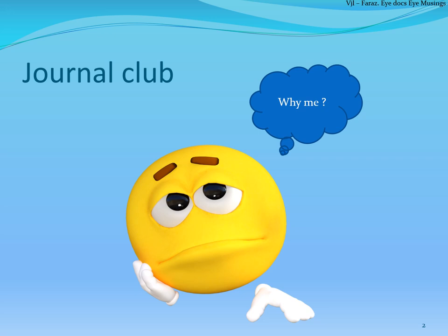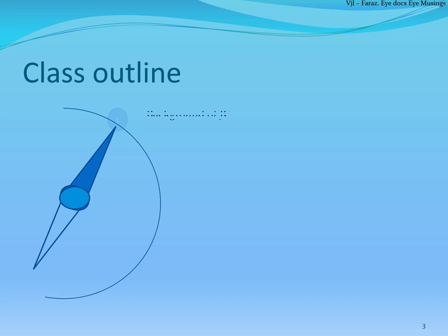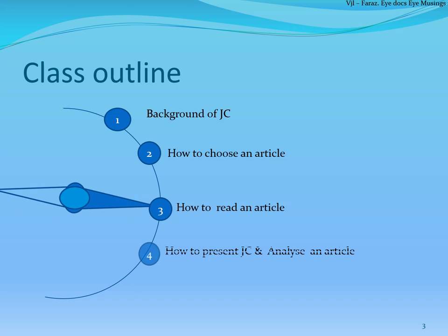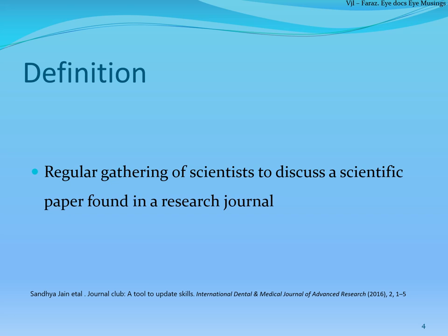In this presentation we will be talking about the background of JC, how to choose an article, how to read an article, how to present a JC, and how to analyze an article. Journal club is a regular gathering of scientists to discuss scientific papers found in research journals. One or two members present the summary of the chosen paper, followed by healthy discussion and a healthy amount of skepticism toward the results.